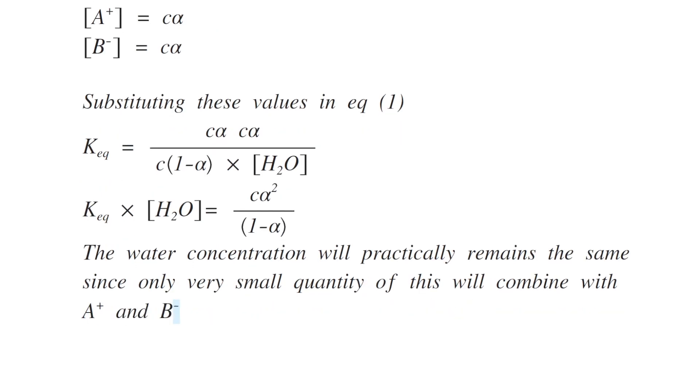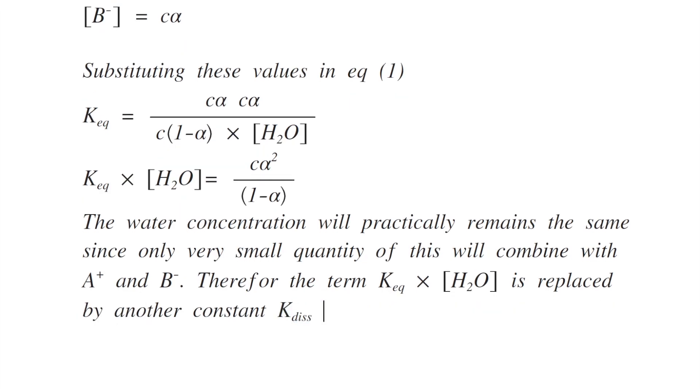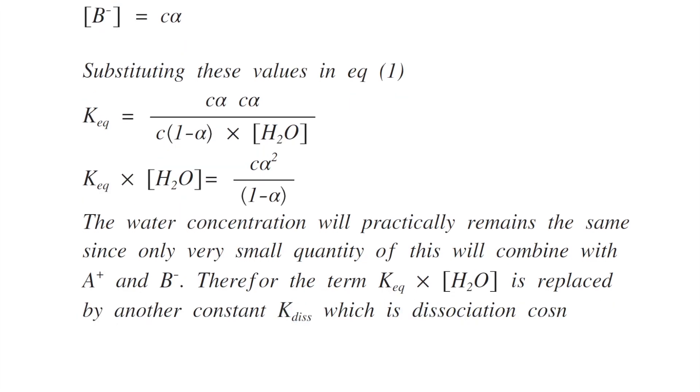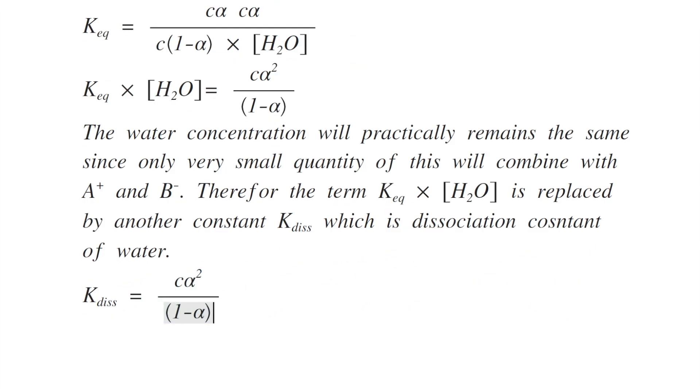K dissociation equals K equilibrium into concentration of water, and the equation for K dissociation becomes C alpha squared divided by 1 minus alpha.